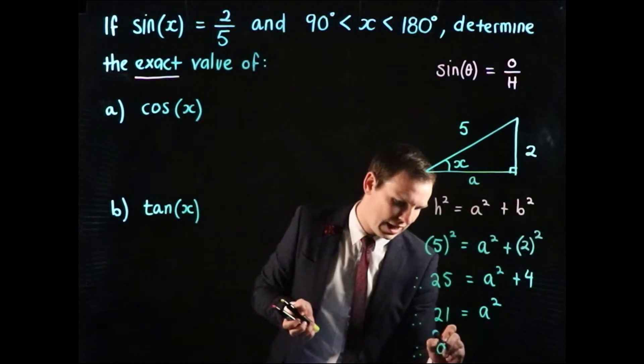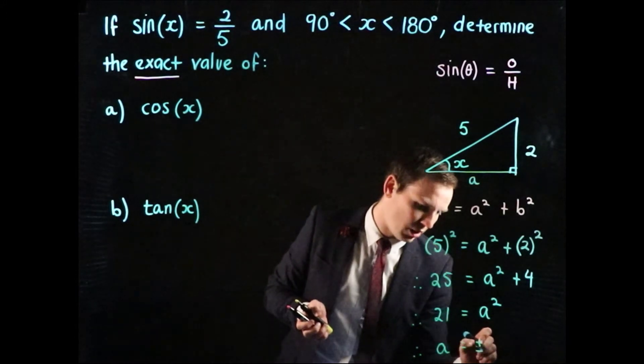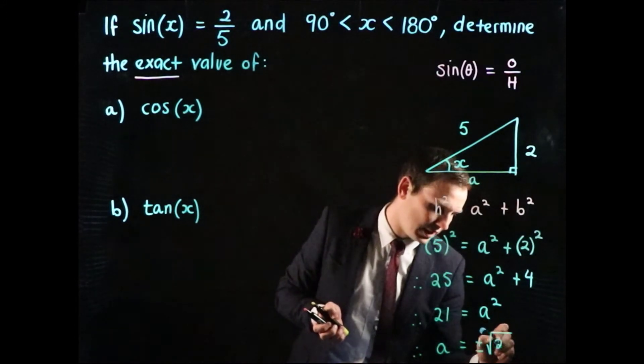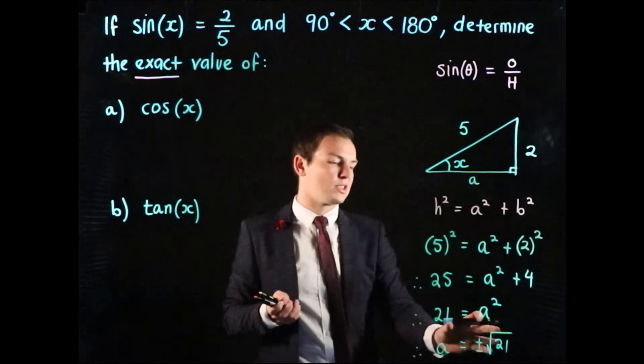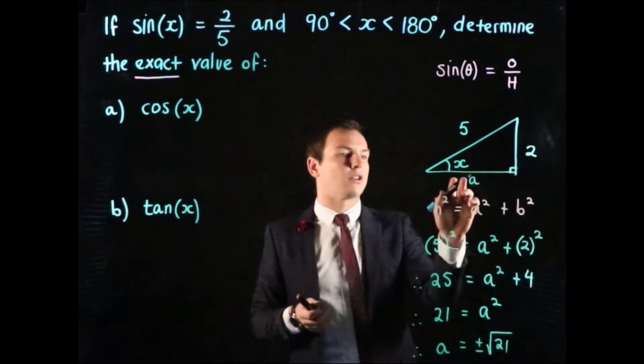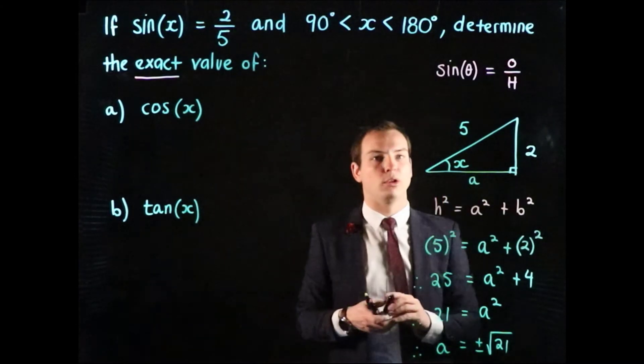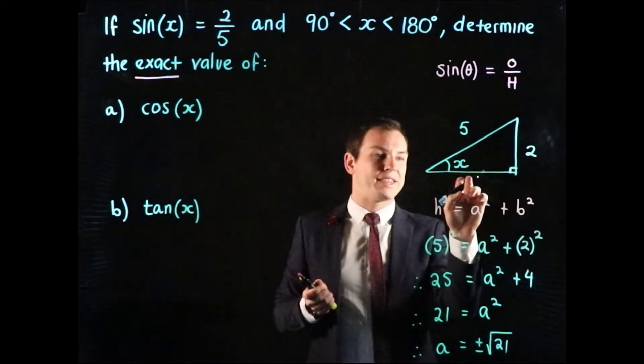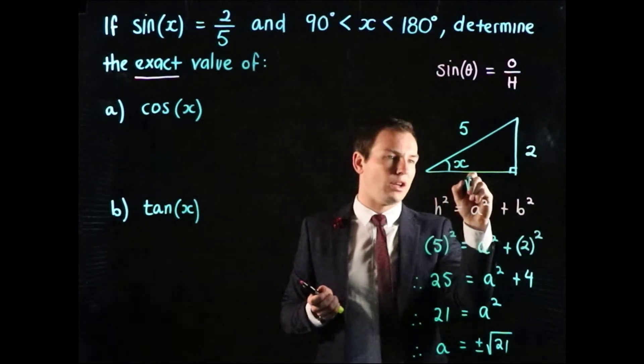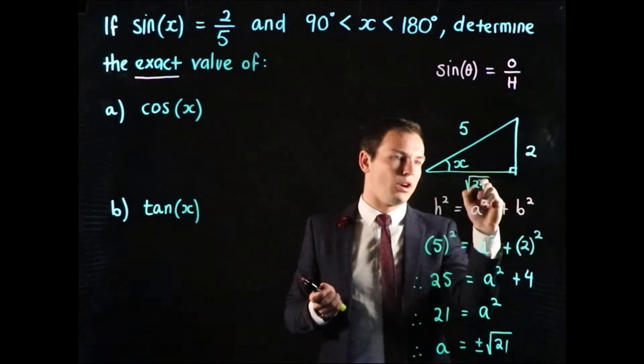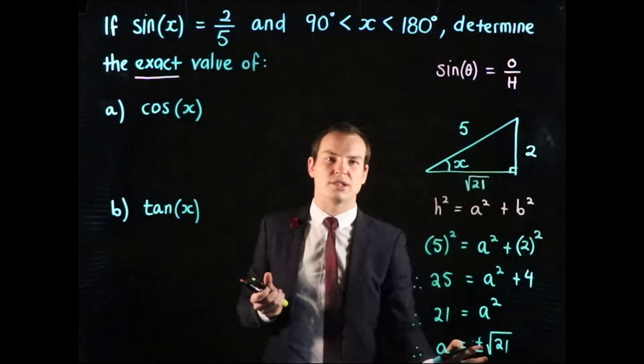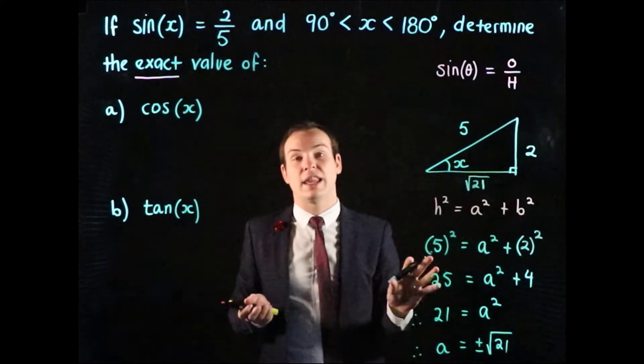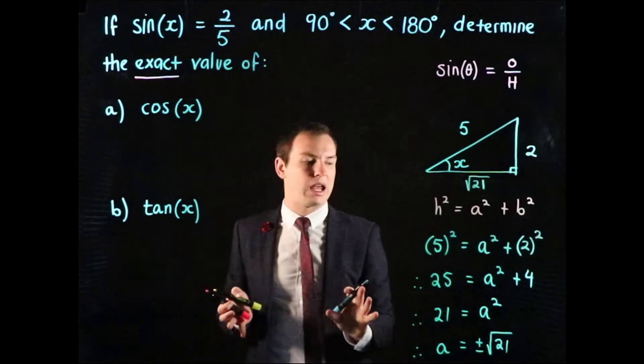Therefore, a must equal plus or minus the square root of 21. Taking the positive value for now, I can replace this a with the square root of 21. We're going to pick the positive case and decide later whether we need negatives or positives in our answer.